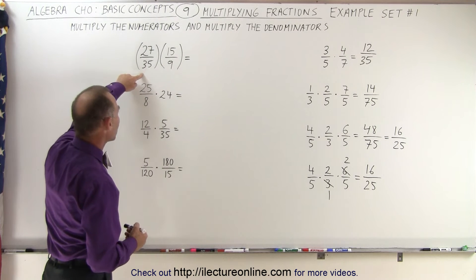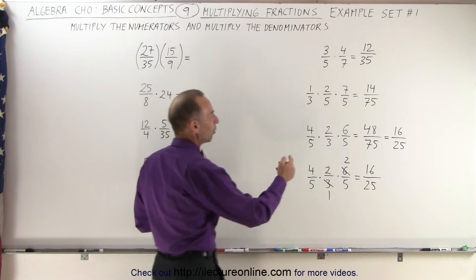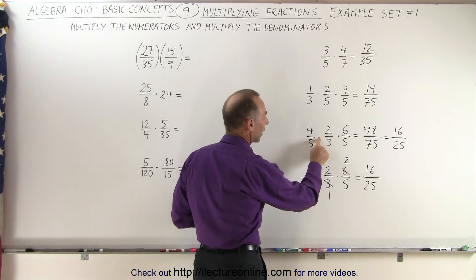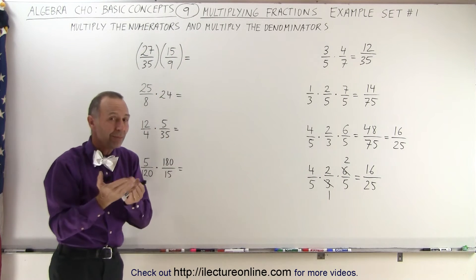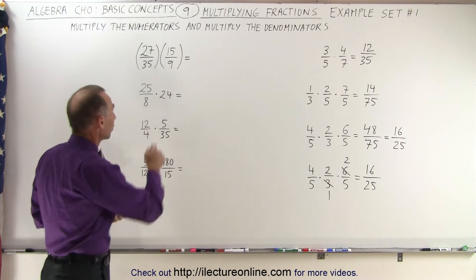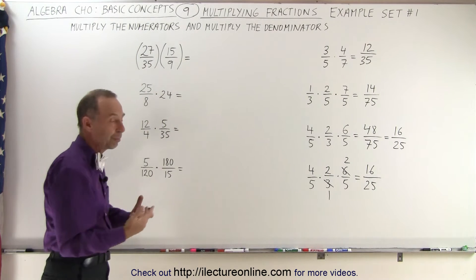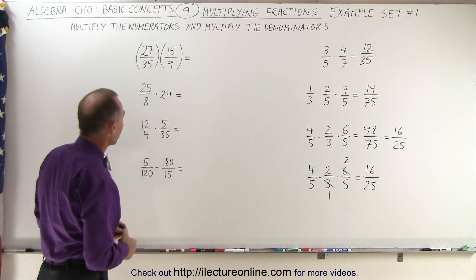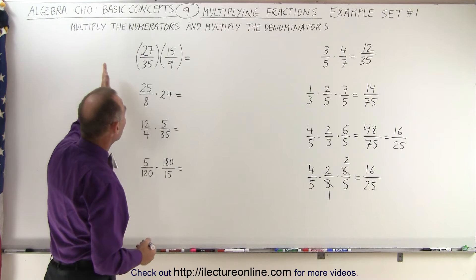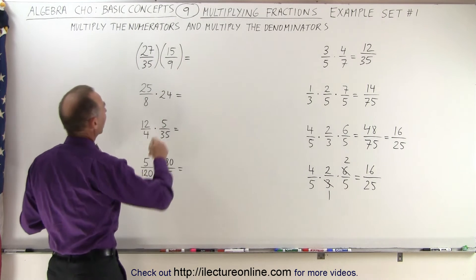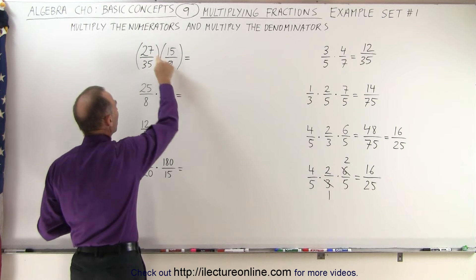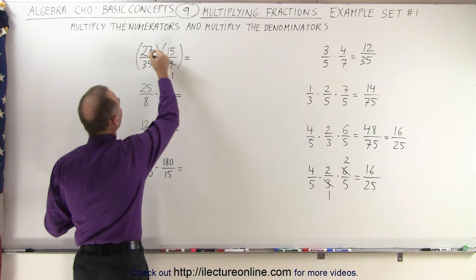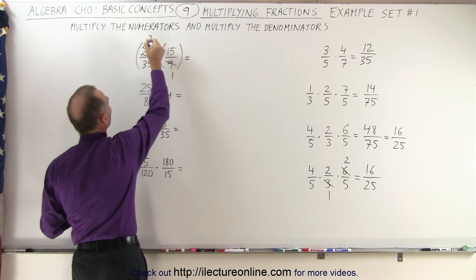We're going to do the same over here. Notice we can show multiplication by putting a dot there, or we can simply put parentheses around it with a space in between, which means we're multiplying those together. We don't have to put a dot there, it's simply implied. Before we multiply this through, notice we have a 9 here and a 27 there. Both are divisible by 9. So 9 divided by 9 is 1, and 27 divided by 9 is 3.